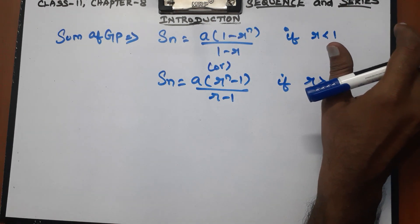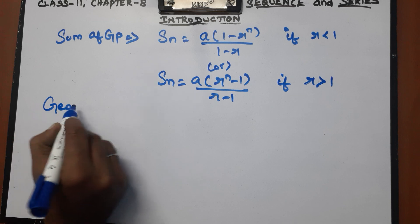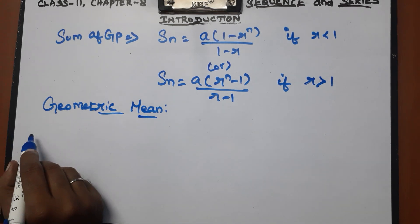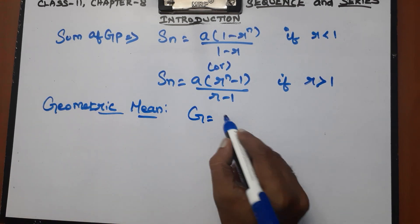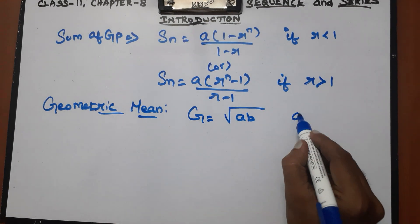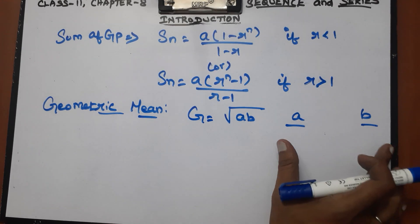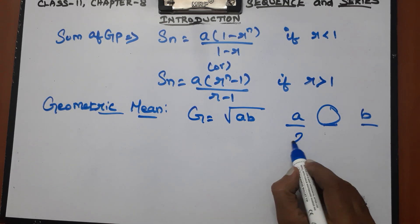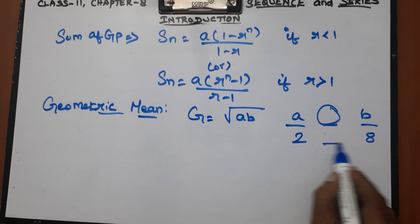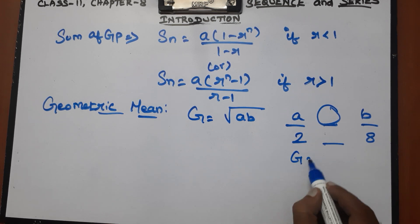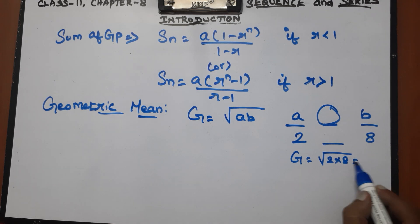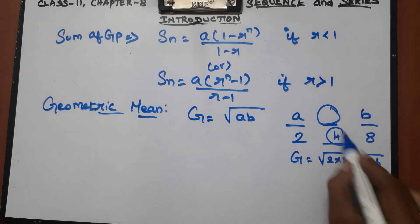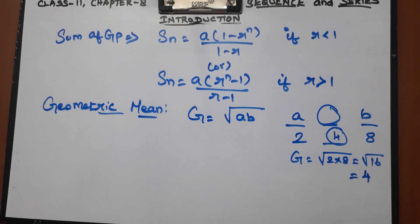Next is Geometric Mean. The Geometric Mean G of two numbers A and B is: G = √(A × B). For example, if A = 2 and B = 8, then G = √(2 × 8) = √16 = 4. So the Geometric Mean of 2 and 8 is 4.